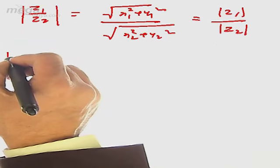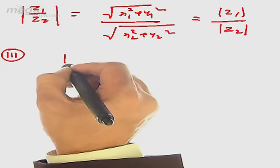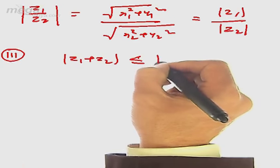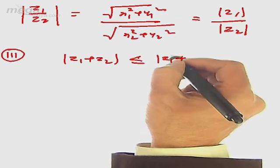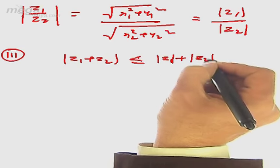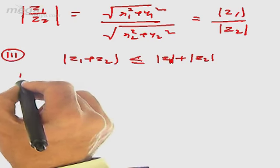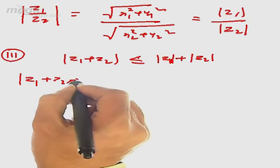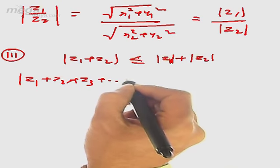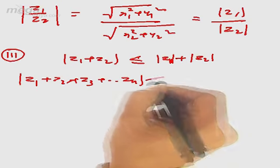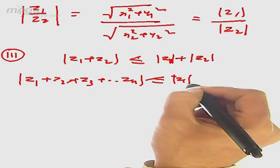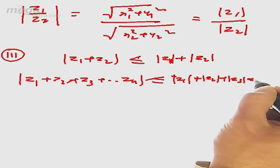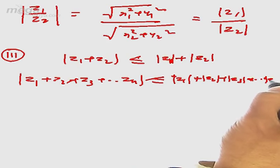The third property of complex numbers is the triangle inequality: |z1 + z2| ≤ |z1| + |z2|. We can generalize this as |z1 + z2 + z3 + … + zn| ≤ |z1| + |z2| + |z3| + … + |zn|.